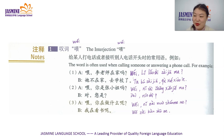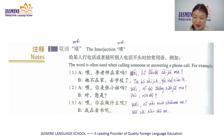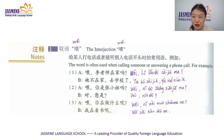Now let's see grammar point 1. The interjection 喂 is often used when calling someone or answering a phone call. For example: